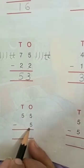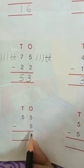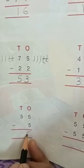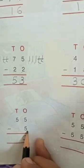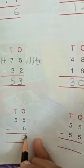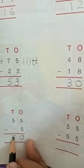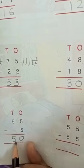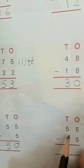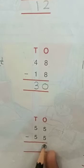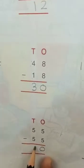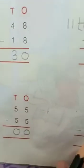Now 55 minus 5: five minus five — yes, zero. If we have to minus the same number from that number, the answer is zero. Now five — there is no other number, so five remains five. The answer is 50. Now 55 minus 55: five minus five is zero, again five minus five is zero. If we have to minus the same number from that same number, the answer is zero.